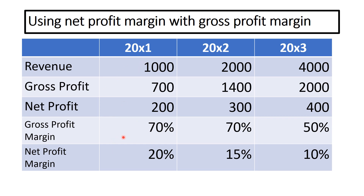In the first year, we kept 70p in the pound as our gross profit margin. That means we had a difference of 50p in the pound for overheads, and we kept 20p in the pound as our net profit margin. In the following year, our net profit margin has dropped down by 5%, so we're going to investigate why. We can see the gross profit margin has stayed the same, but the net profit margin has fallen — meaning it must be the overheads we need to look at to find the reason for the drop in performance.